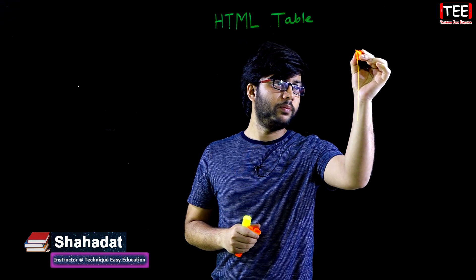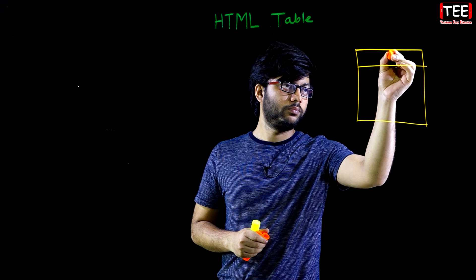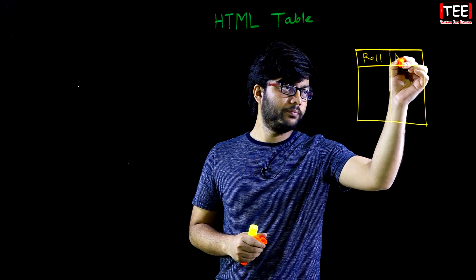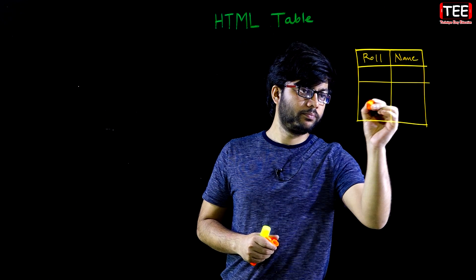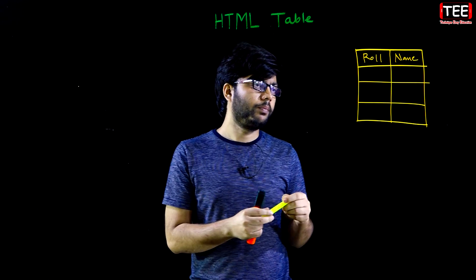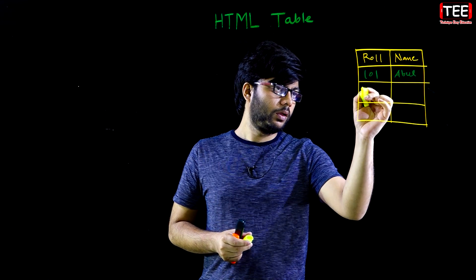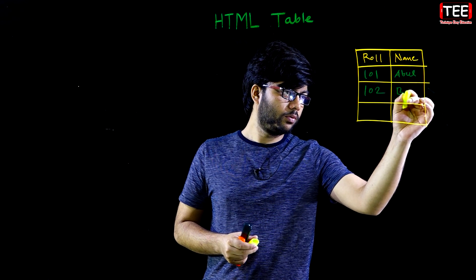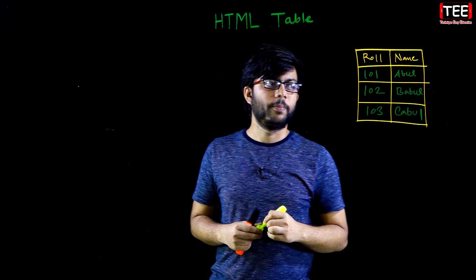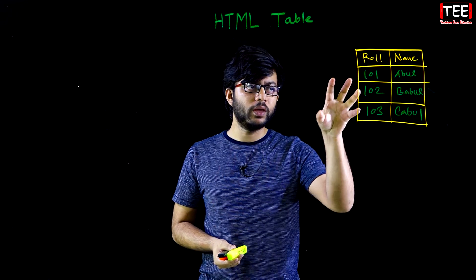Let's see — in our exam there is a rule and there is a name. We put a rule. Rule 101 has the name, Rule 102 also has a name, and number 103 has a date. This table will be the output of the HTML source code.